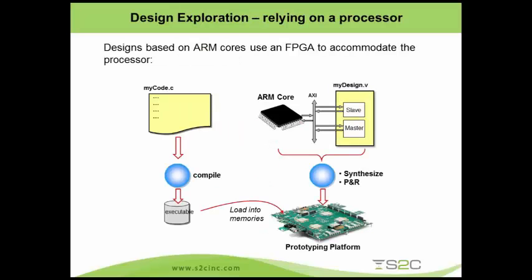Let's look at this from another angle. For a complete test, your design typically consists of a processor such as ARM, a bus such as AXI, and the design blocks you created — slave, master, and so on. You need to compile the whole design, synthesize, place and route, download to the FPGA, compile your C code, load it into memory, and start running. Everyone knows this might take weeks, and if you're not careful, months. So is this the only way to do it?